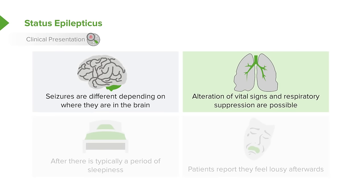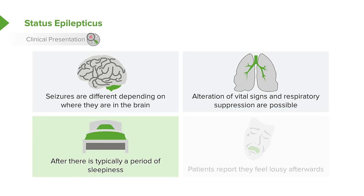Alteration of vital signs and respiratory suppression are absolutely possible during seizures. After seizures, there may be a period of sleepiness called the post-ictal period, especially true for generalized seizures. Also after seizures, a patient may develop a transient paralysis of one side of the body — even if it's a generalized seizure — and that's called Todd's paralysis.